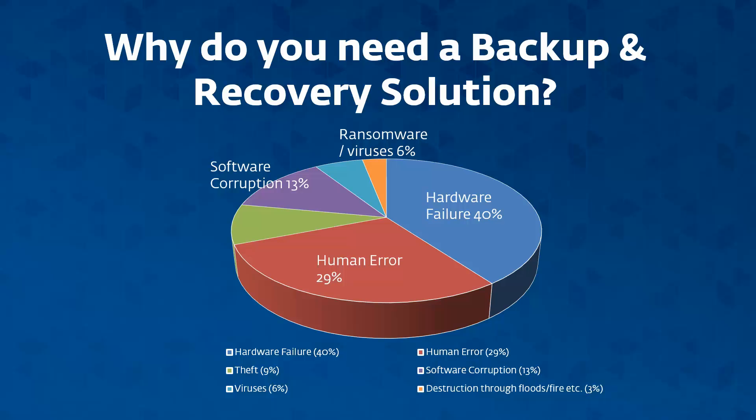Software corruption and theft are next in line with 13 and 9 percent respectively. And then the most uncommon, surprisingly, is viruses and destruction through other causes. With ransomware becoming a far more common and prevalent threat on the internet, we do expect these numbers to change somewhat, but hardware failure and human error will most likely remain the top two causes.